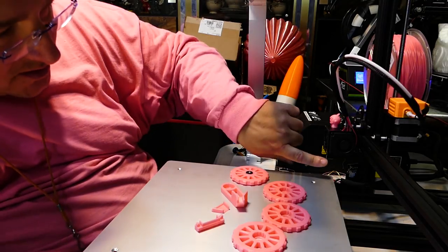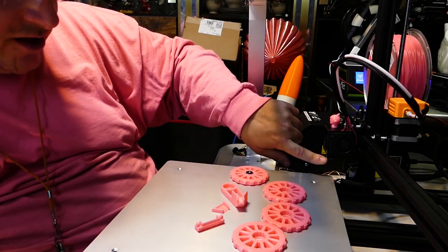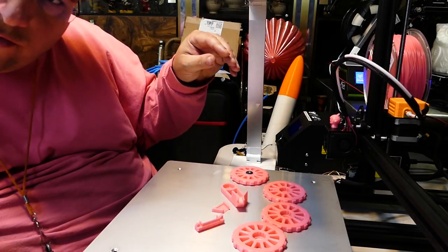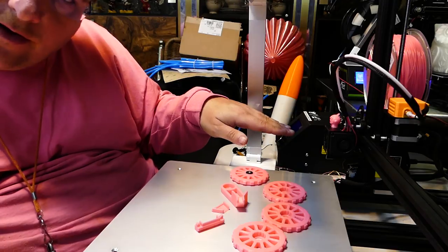This replaces this little plastic bit here, and all it does is change the deflection angle so that the air coming off the part cooler actually blows to the part and not onto your hot end.